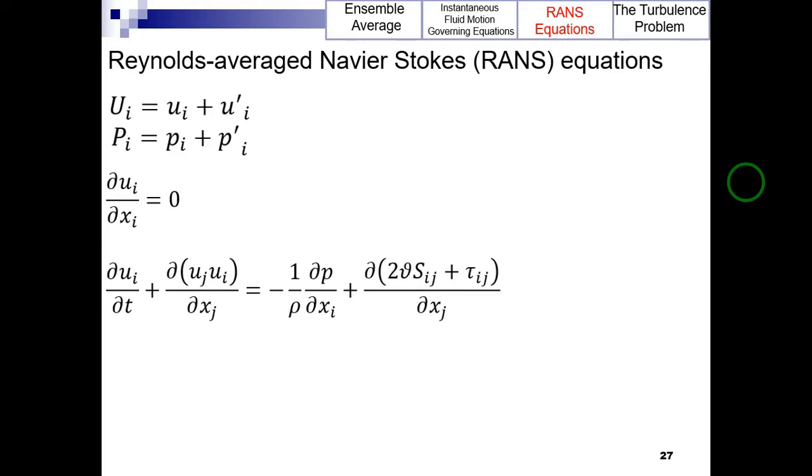Note that these equations now express the mean fluid motion, not the instantaneous fluid motion. The ensemble averaging of the Navier-Stokes equations has introduced new unknown correlation terms in the momentum equations which are shown here. They are called the turbulent or Reynolds stress tensor and are written as follows.